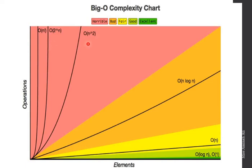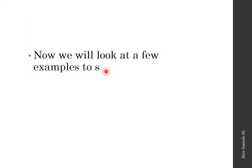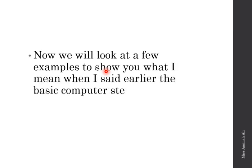Some of these have horrible growth rates. When we calculate complexity, if a function's run time grows like O(n²) or beyond, that is considered horrible. On the complexity chart, green represents excellent time, then good, fair, bad, and horrible. Now we will look at a few examples to show what is meant by basic computer steps and how we actually calculate an algorithm's complexity.